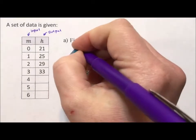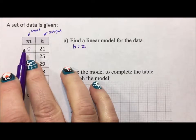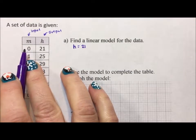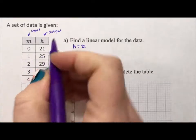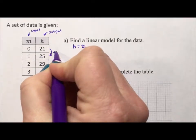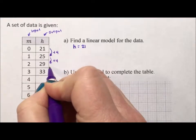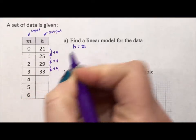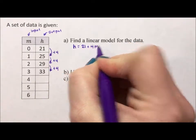So h is equal to 21. That's what h is equal to when m, our input variable, has no effect on it. Now, when m goes up by one, h goes up by four. When m goes up by another one, h goes up by another four. And that pattern holds. That means every time m goes up by one, h goes up by four.